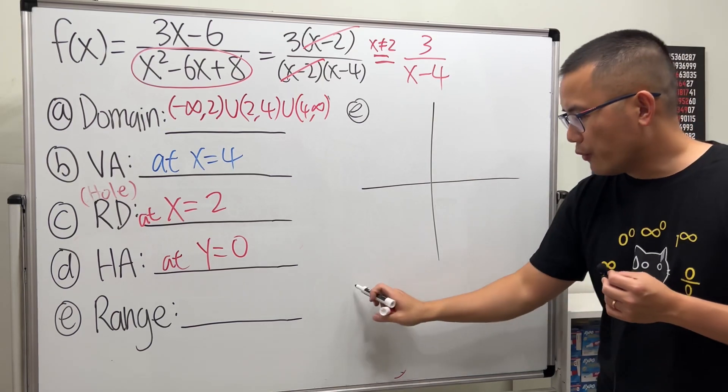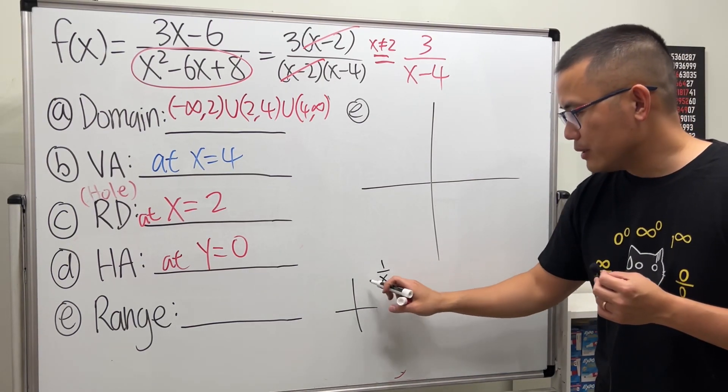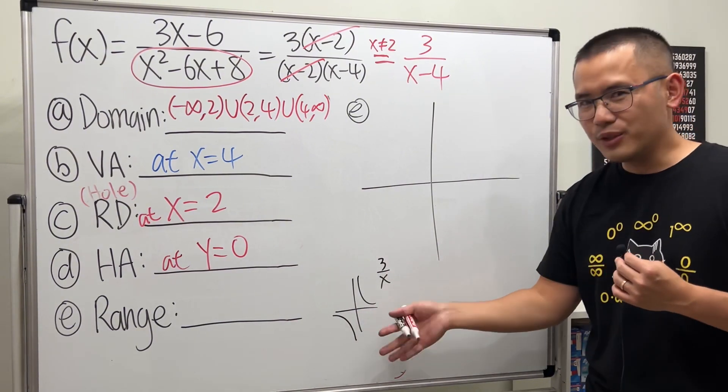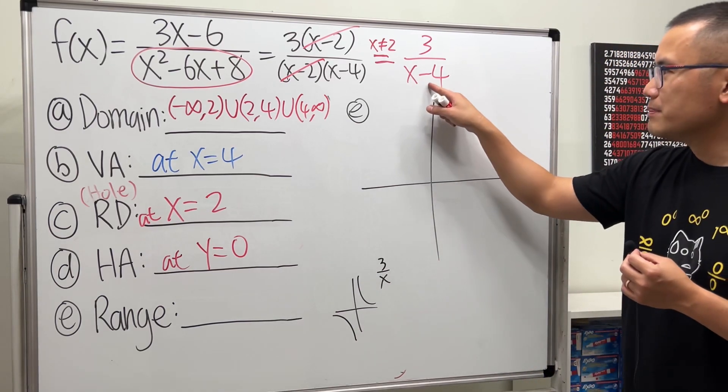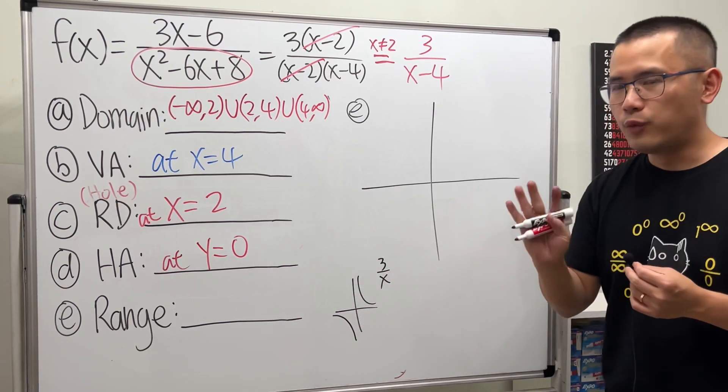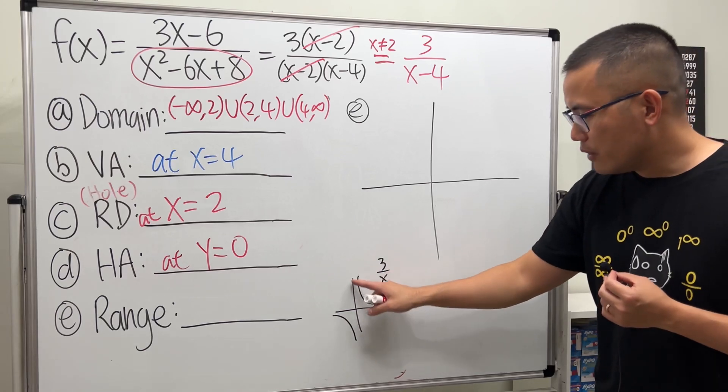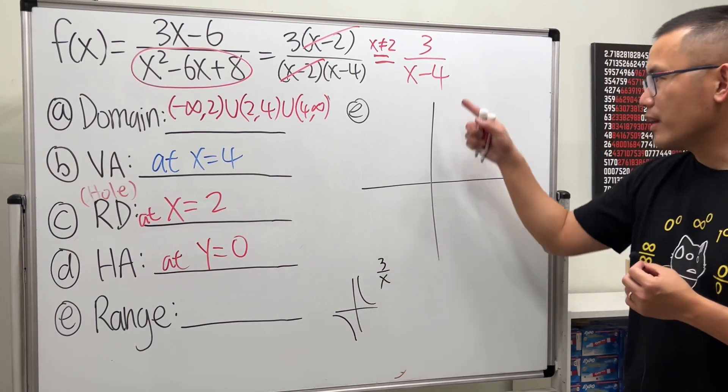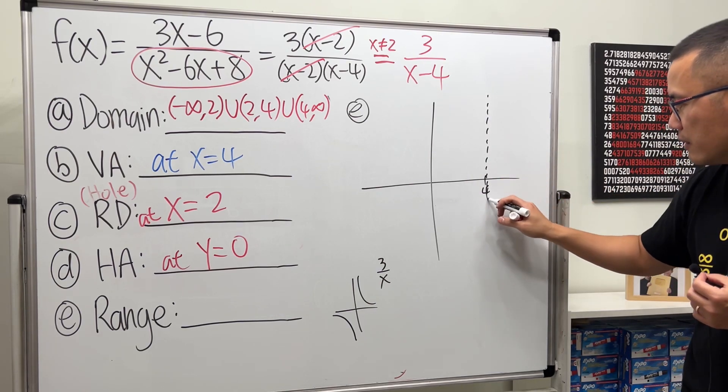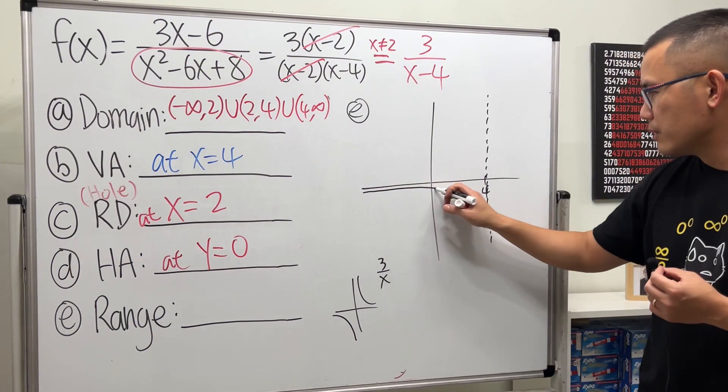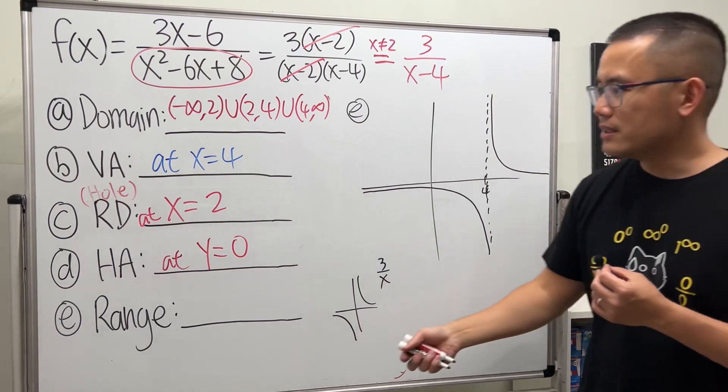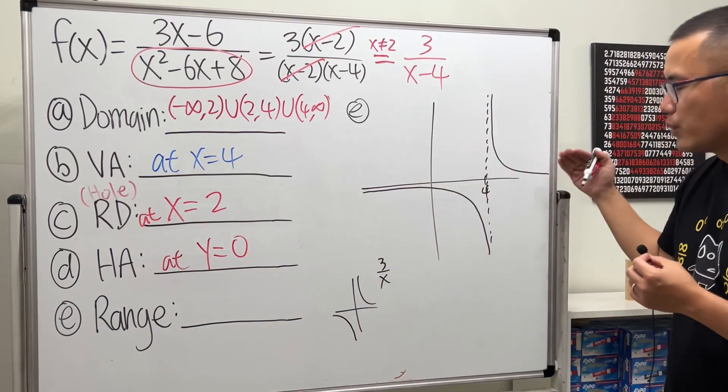Starting with 3 over x, 1 over x looks like this. If you have 3 over x, then it's going to look similar. Now, we have x-4 on the bottom. That means we take this, shift to the right, 4 times. Because originally, the vertical asymptote is 0, right now it's going to be a 4. So, let me just say here is 4, and then we have the vertical asymptote. And then I'm just going to sketch the graph like this, and like that. And in fact, you can see that horizontal asymptote is when y is equal to 0.